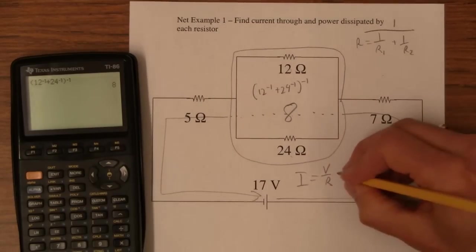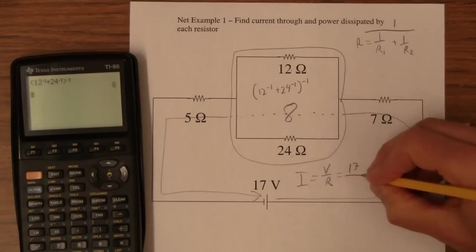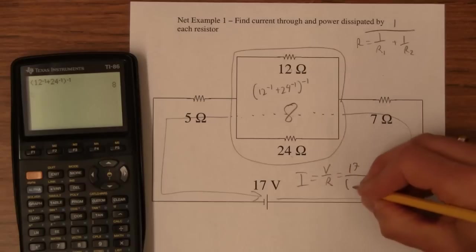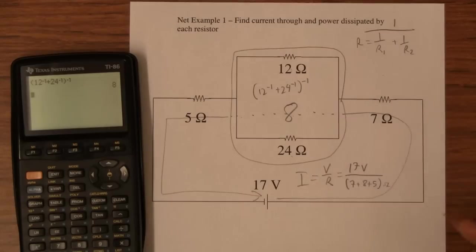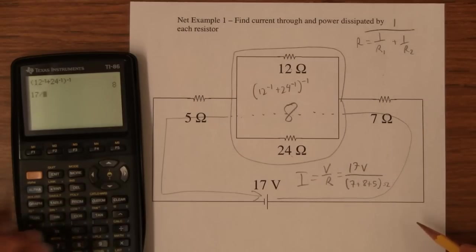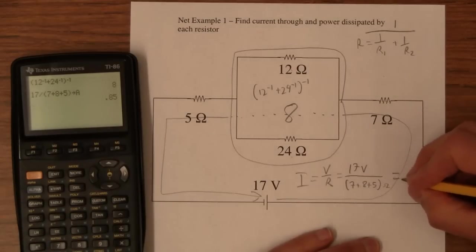That's going to be 17 divided by 7 plus 8 plus 5 because that's volts and these are ohms. That's how we solve series circuits. So 17 divided by parentheses 7 plus 8 plus 5. And I'm going to store that in A just for fun. That is 0.85 amps.